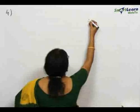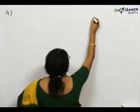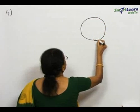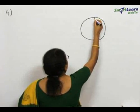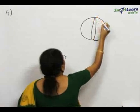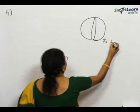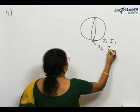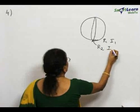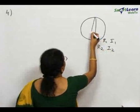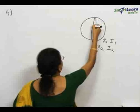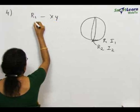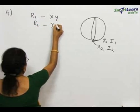First, let us draw the diagram for this case. Ring 1 has radius R1 carrying current I1. Ring 2 has radius R2 carrying current I2. Ring 1 is in the XY plane and ring 2 is in the YZ plane.